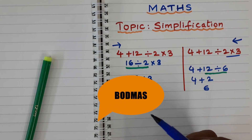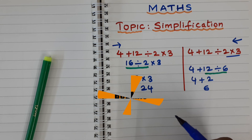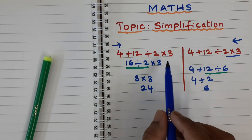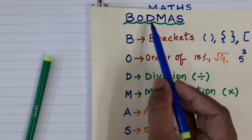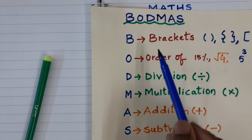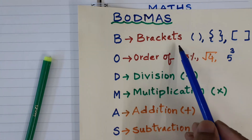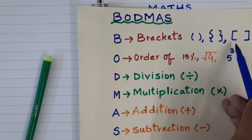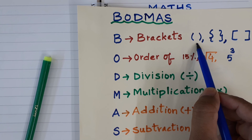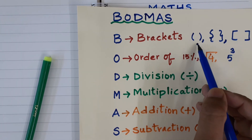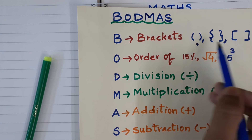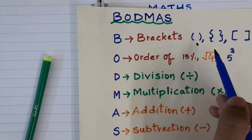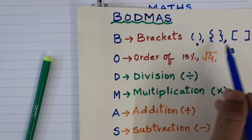That rule is called BODMAS — B-O-D-M-A-S. By using BODMAS you can get the only one unique correct answer. B stands for brackets. In brackets we have an order we must maintain. First we have the common bracket, second the curly bracket, then the square bracket. We have to follow this order.